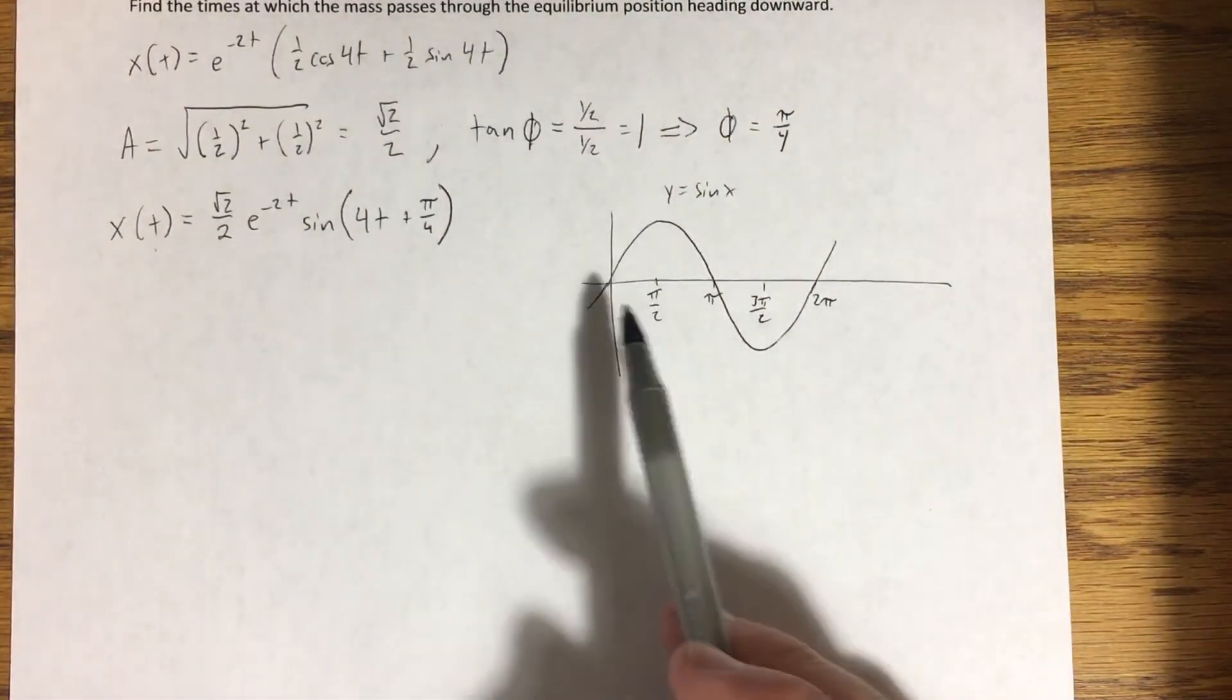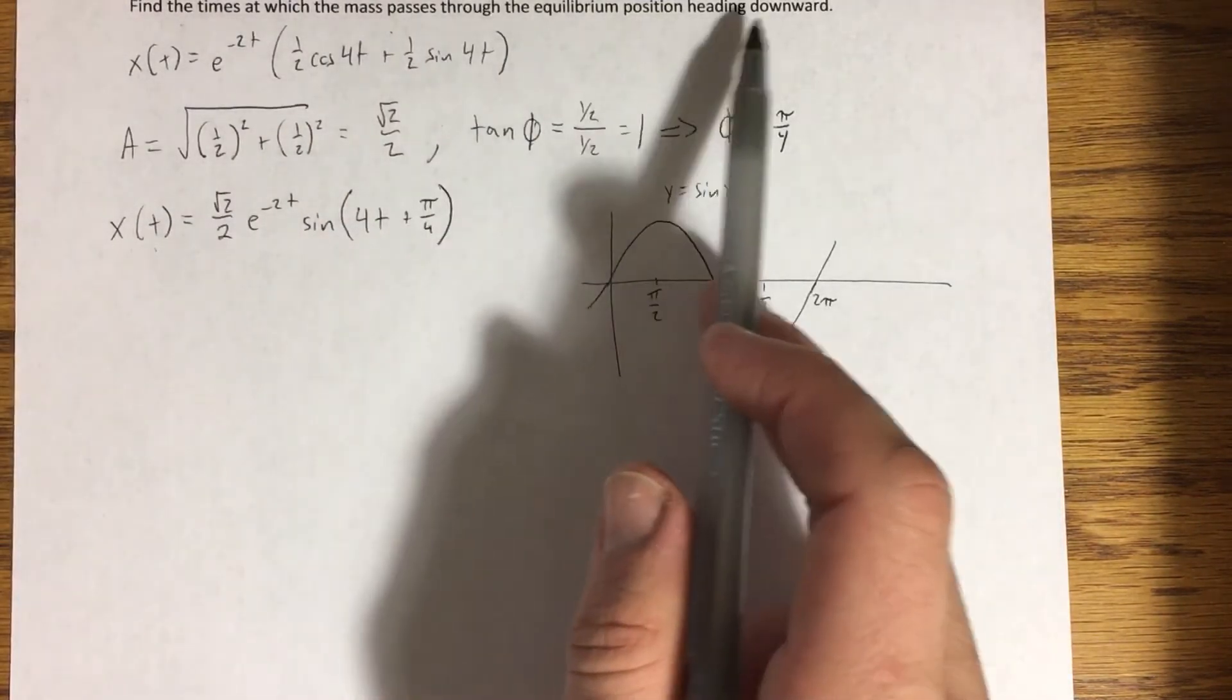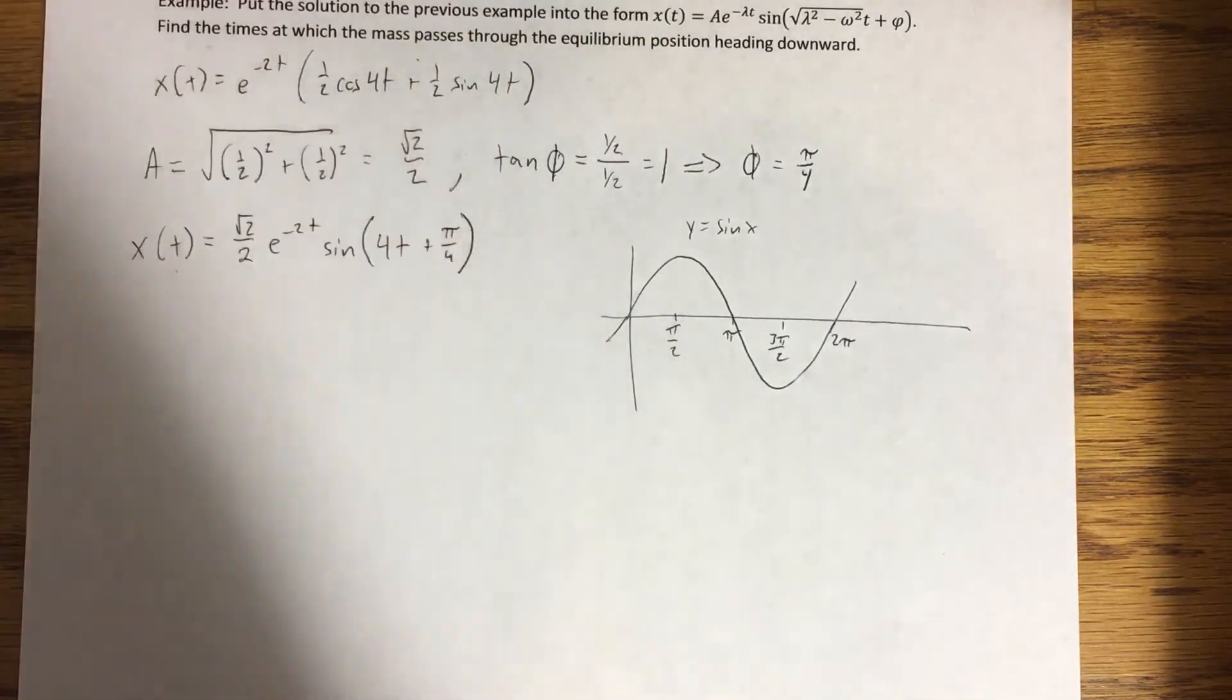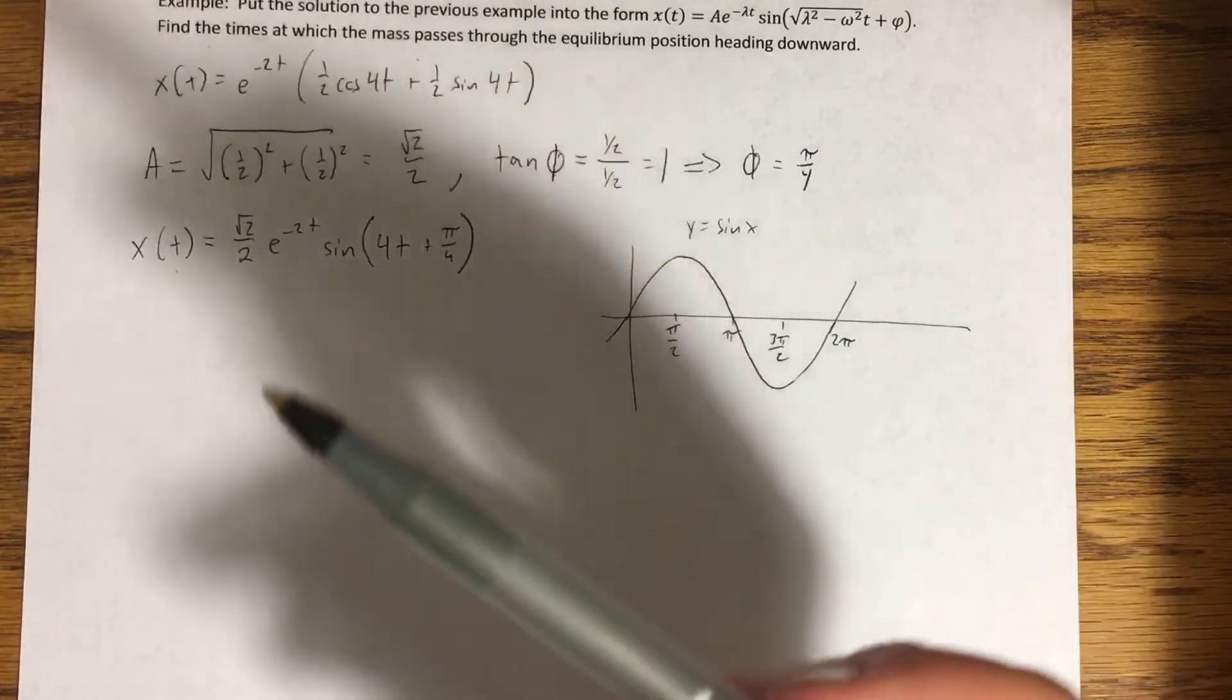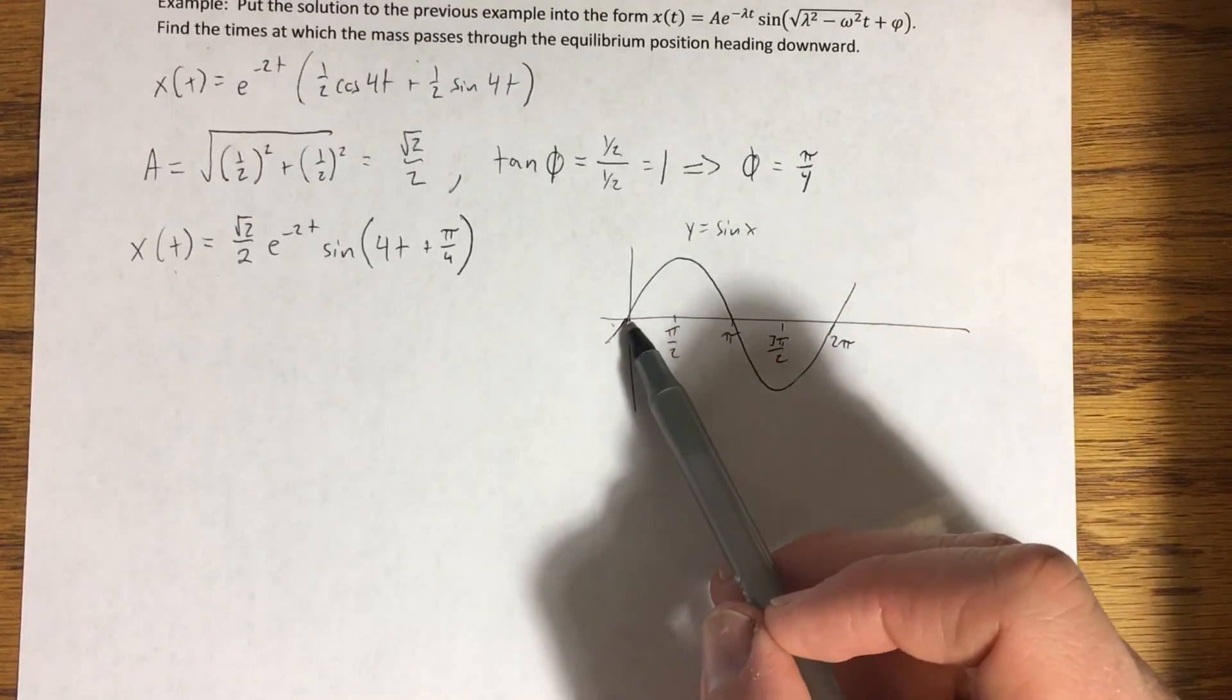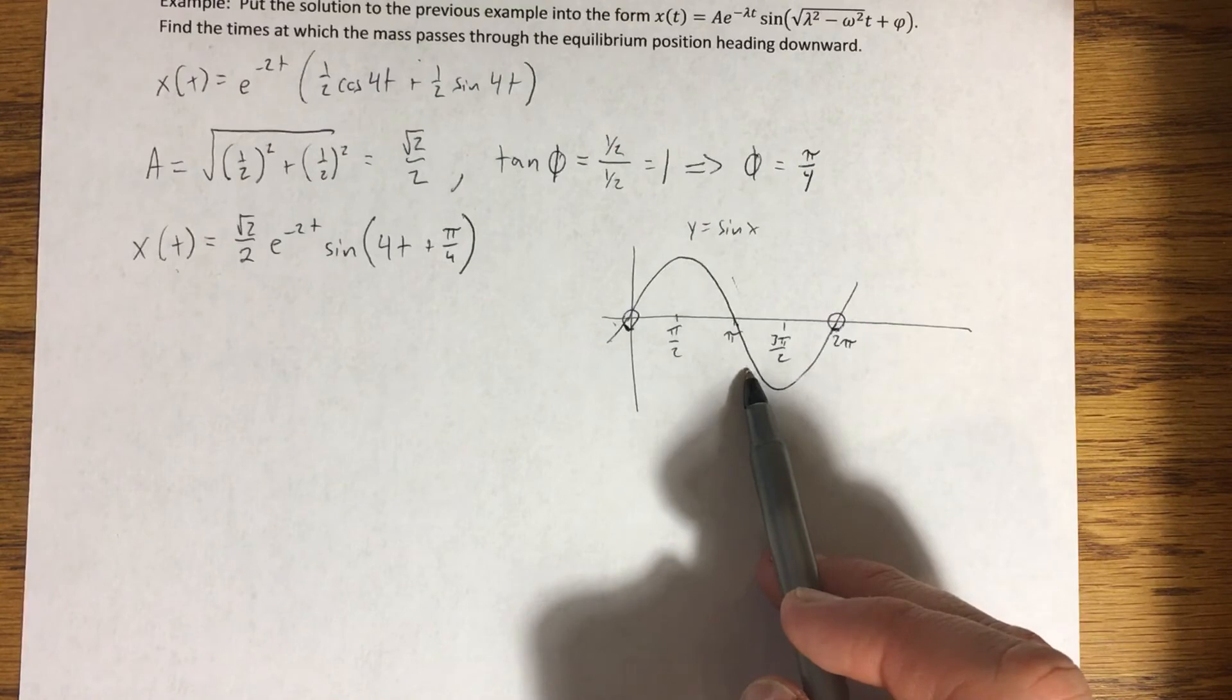So there's a few places where my function passes through zero, right? But it's saying find the times at which the mass passes through equilibrium heading downward. Downward. The way that we orient our axis for these spring mass systems is that if you're moving downward and you pass through the equilibrium position, you're going from the negative x values through zero and into the positive x values. So looking at my graph for sine of x, when do we go from negative values past zero and into positive values? Well, it happens here and it happens here. Here we have a zero, but we're going the wrong direction.